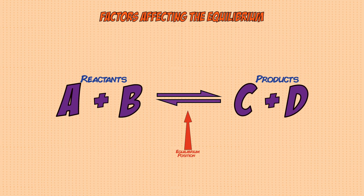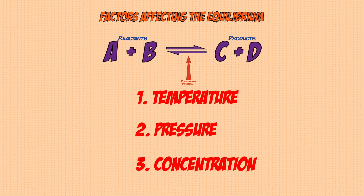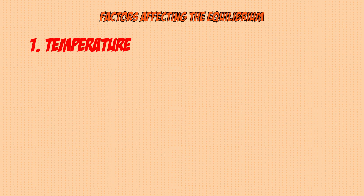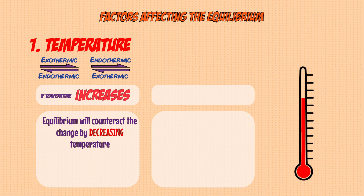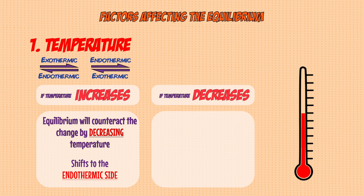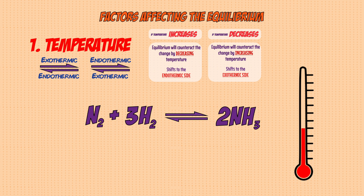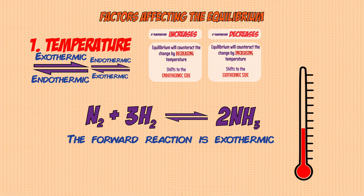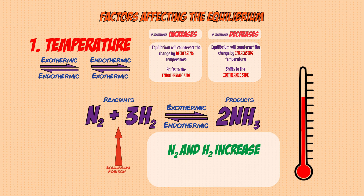There are three factors that affect equilibrium position: temperature, pressure, and concentration. For temperature, the shift depends on whether the reactions are exothermic or endothermic. If temperature increases, the equilibrium shifts to the endothermic side to decrease the temperature. If temperature decreases, it shifts to the exothermic side to increase it. For example, if the forward reaction is exothermic and temperature increases, the equilibrium shifts left — so nitrogen and hydrogen increase and NH3 decreases.